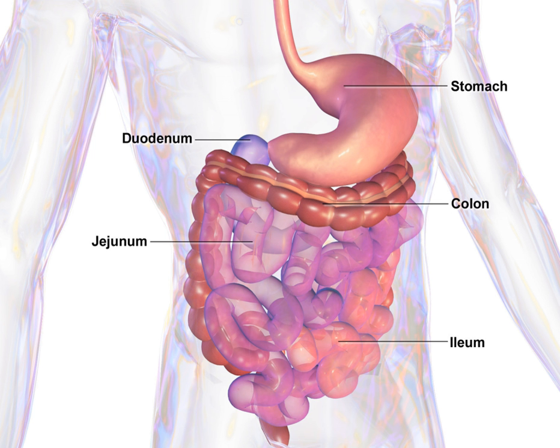Cells of the GI tract release hormones to help regulate the digestive process. These digestive hormones, including gastrin, secretin, cholecystokinin, and ghrelin, are mediated through either intracrine or autocrine mechanisms, indicating that the cells releasing these hormones are conserved structures throughout evolution.